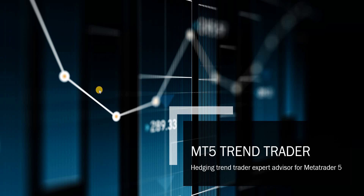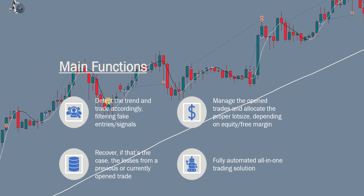The RobotFX MT5 Trend Trader is, by its name, an expert advisor designed to trade with the trend. Its main function is to buy in an uptrend and sell in a downtrend. It can filter fake entries, manage open trades, allocate a proper lot size according to your free margin and equity, and recover a lost trade — whether it is open or closed. In a nutshell, it's a fully automated trading solution.